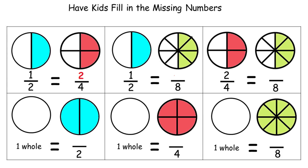Have kids fill in the missing numbers to make equivalent fractions. Each missing number is a numerator, and it is in the second fraction of each problem. The first example is done for us — the two represents the two parts colored in red. So we move across to the second problem. Remember, we are looking for the numerator; it tells us how many parts are filled in. In this example, we see four green parts, so that is our number: four.